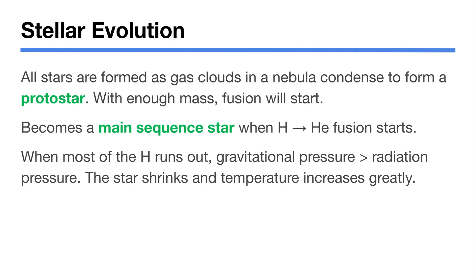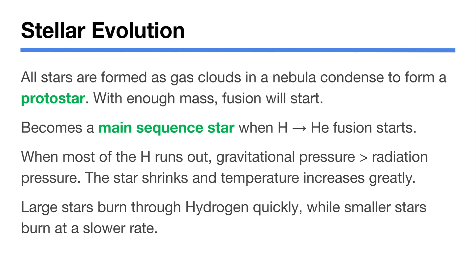This stage takes different amounts of time for different stars. The sun burns at a pretty steady rate, while really big stars burn their fuel super fast and little stars are very efficient and take their time. Eventually stars run low enough on hydrogen that gravity starts to win — gravitational pressure starts to beat the radiation pressure from fusion, which is slowing down, and the star starts to collapse and shrink. Big stars tend to burn fuel quicker, so stellar lifetimes vary enormously — from millions of years to many billions of years.